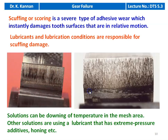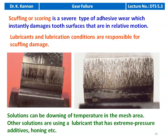Scuffing or scouring is a severe type of adhesive wear which instantly damages the tooth surface that are in relative motion. Lubricant conditions are responsible for scuffing damage — lubricant failure and improper lubricant are the main reasons. The solution can be lowering the temperature in the mesh area; other solutions include using lubricant with extreme pressure additives or honing. The quality of lubricant is to be improved by proper additives to minimize the effect of scoring or adhesive wear on the gear teeth surface.